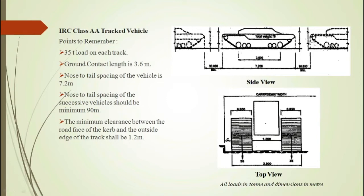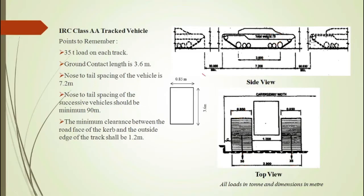This is the typical side view and top view of the IRC Class AA tracked vehicle. As per IRC, the entire 70 ton load is assumed to be distributed as 35 ton load on each of the two tracks. The ground contact length of the IRC Class AA tracked vehicle is 3.6 meter, and the track width dimension is 0.850 meter. Hence the Class AA tracked vehicle generates a ground print of 3.6 m × 0.85 m.